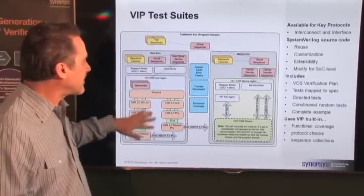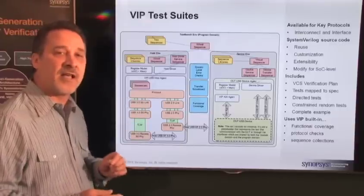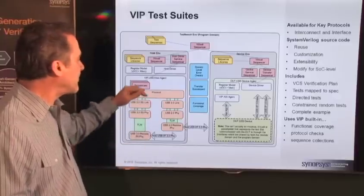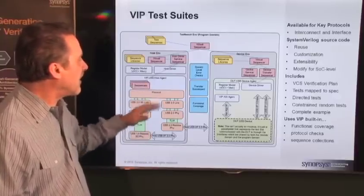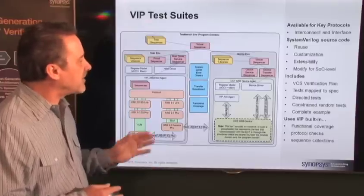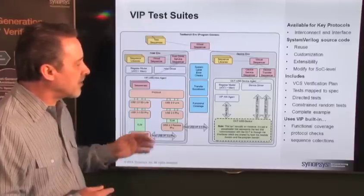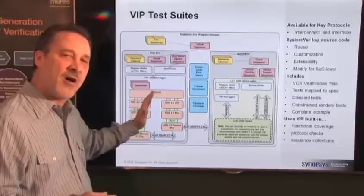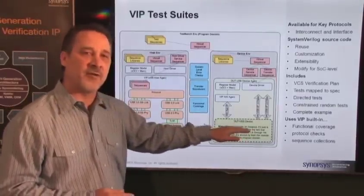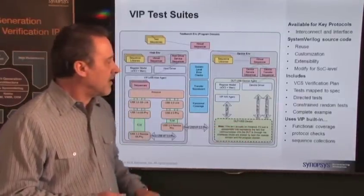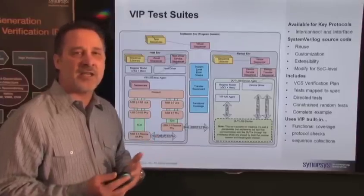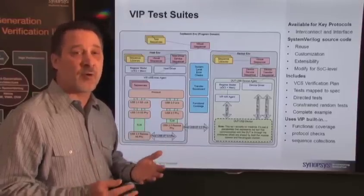As I explained last time, it is architected exactly as you'd expect for a USB VIP — it has a stacked, layered protocol implementation, it has sequencers, it has a top-level agent, etc. In this architecture, you need to look not just at what is on the USB side, but also what is on the other side of your USB device. In this case, it's going to be something on the application side like AXI, AHB, or some sort of bus-based protocol.